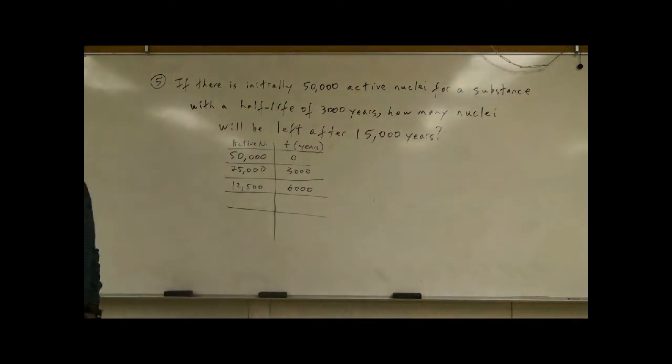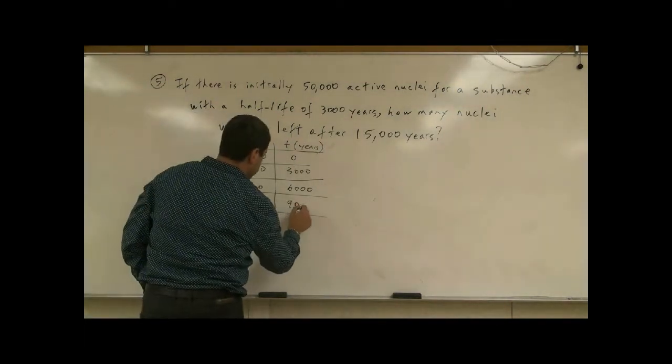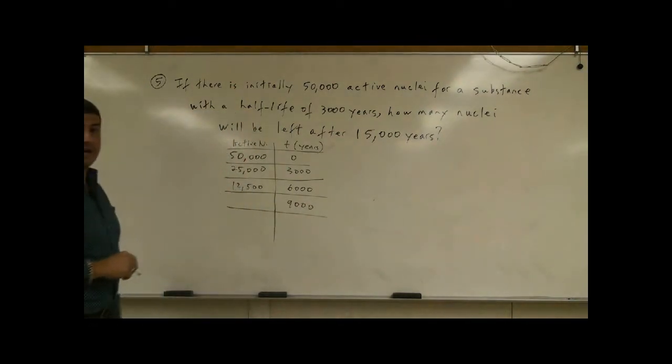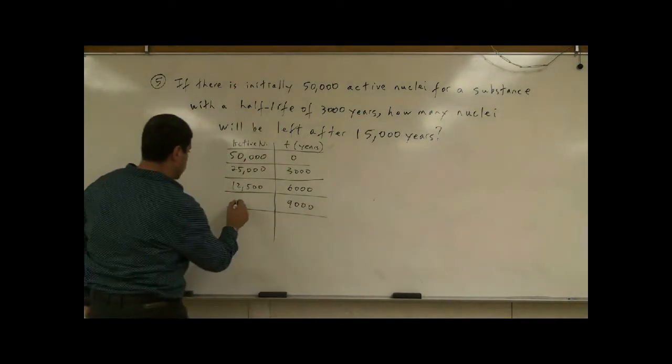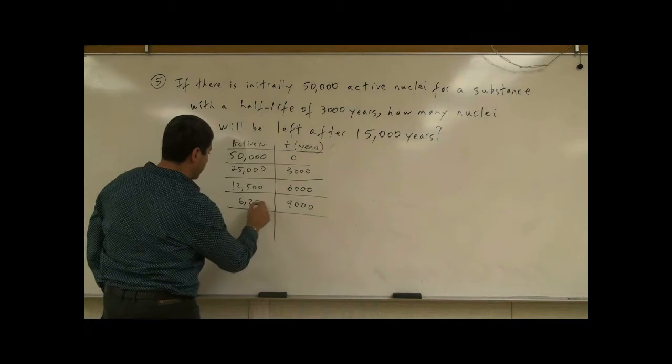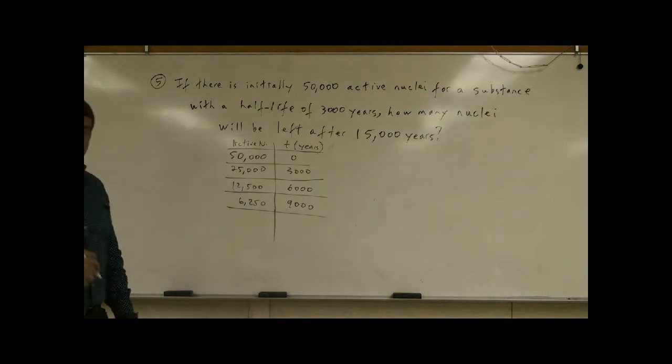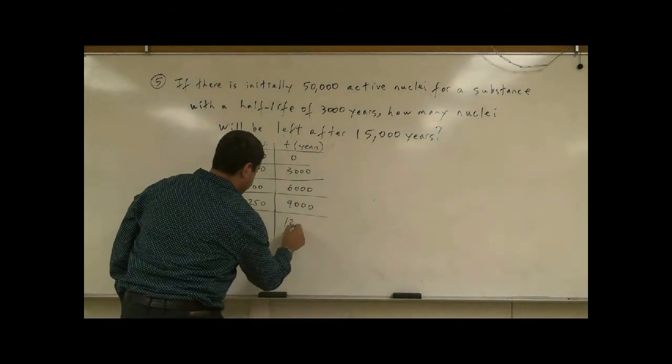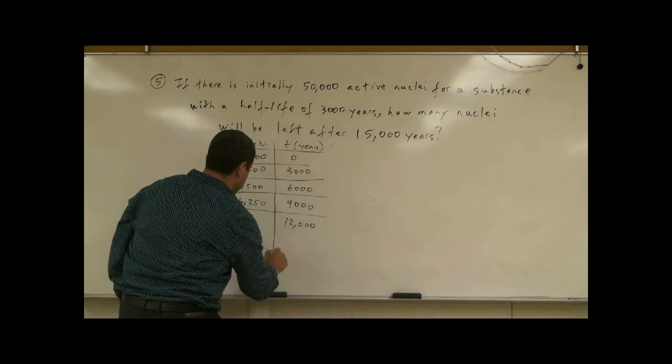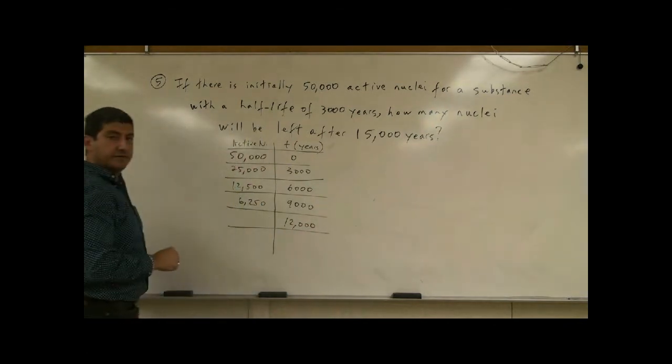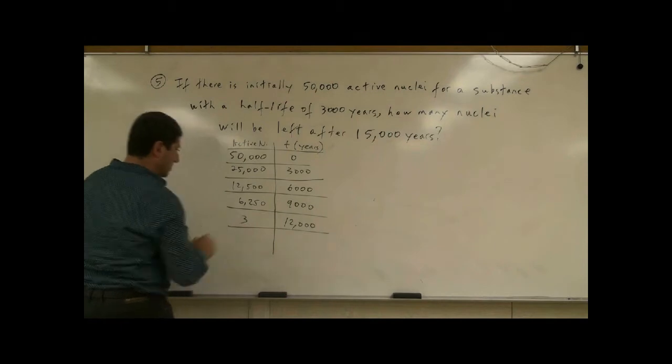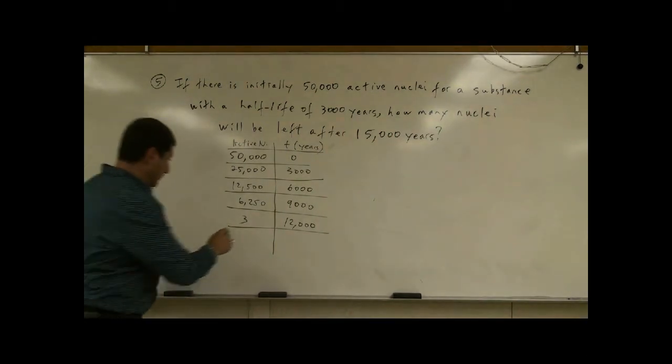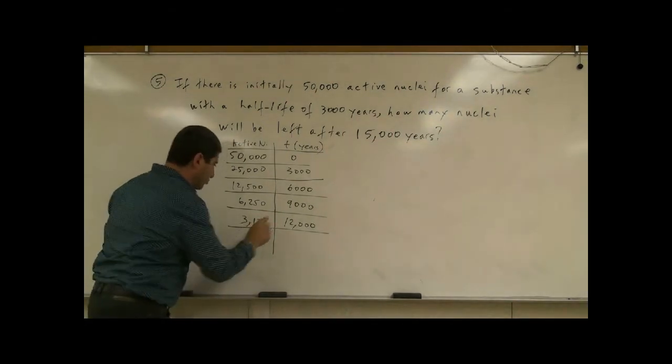After 3,000 more years, that's 9,000 years. What's half of 12,500? That's 6,250. One more half-life, that's going to be 12,000 years. What's going to be left? Well, half of 6,000 is 3,000, half of 250 is 125, so 3,125.